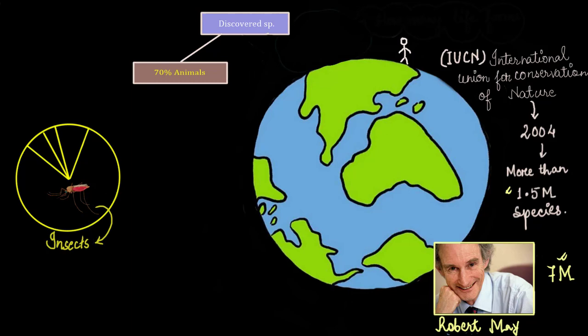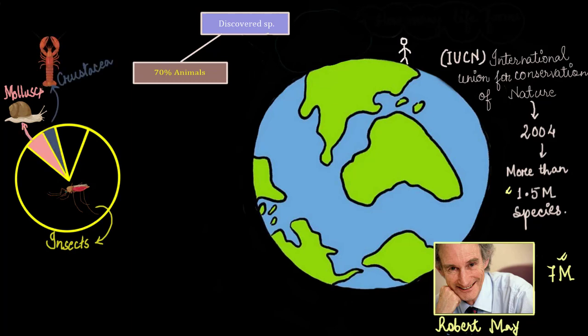Next, after insects, the highest percentage is occupied by the mollusks, popular for their slimy soft bodies. Here is a snail as an example. After the mollusks, we have the crustaceans, for example, the lobsters or the crabs. And the rest part is occupied by the other classes of invertebrates.